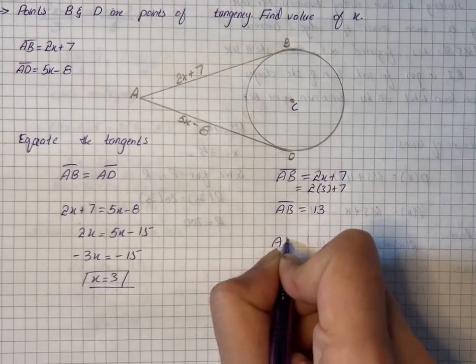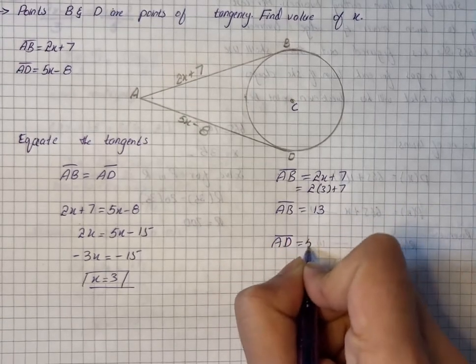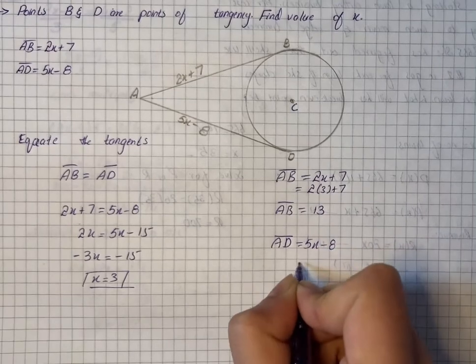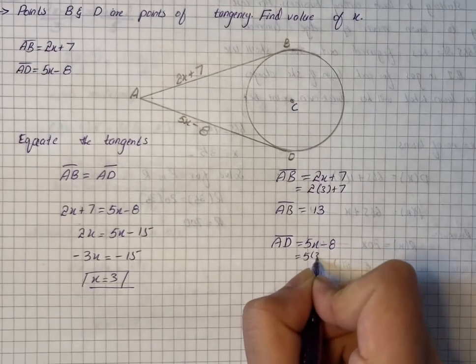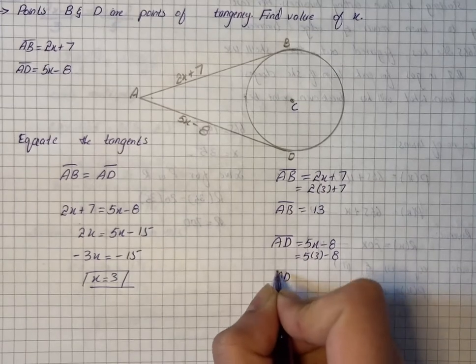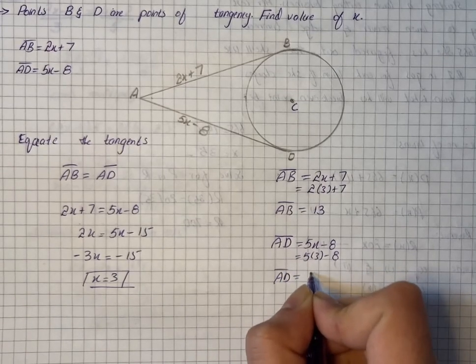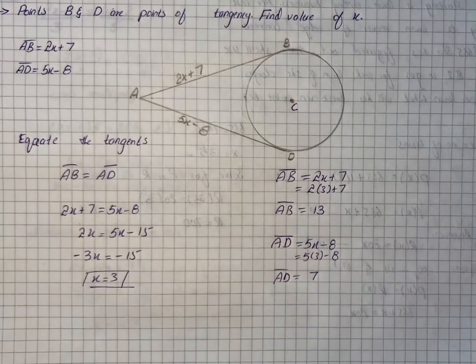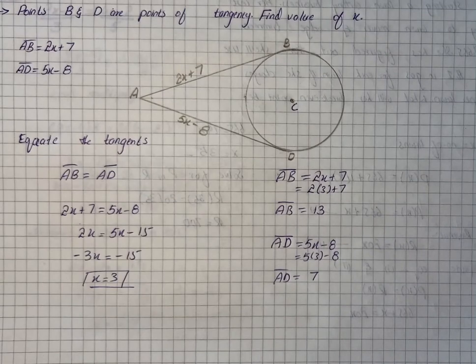For AD it will be 5x minus 8, so 5 into 3, 15 minus 8. AD is equal to 7. So here is our answer for the given question.